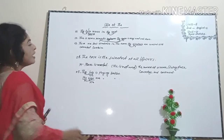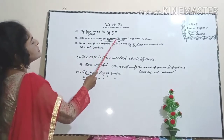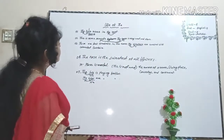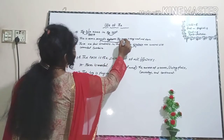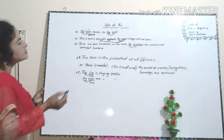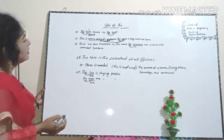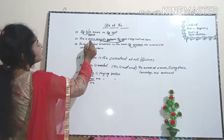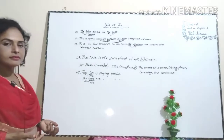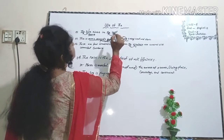Sentence number two — dear learners, here: 'This is Asma Amme's bedroom. The room is very neat and clean.' Okay, dear learners, 'the room' — here I indicate 'room' before 'the'. Here, in the first sentence we describe the room. But in the second sentence, the room is definite.